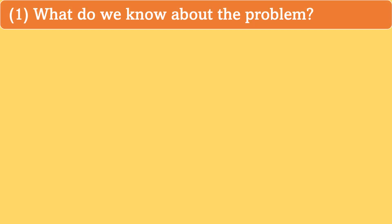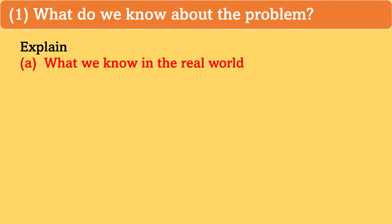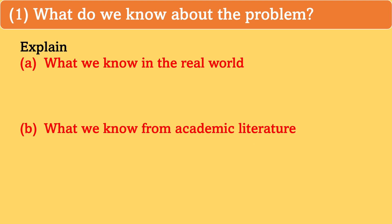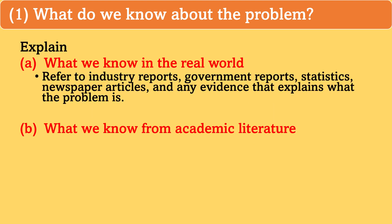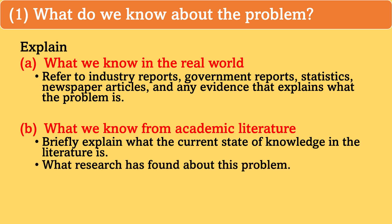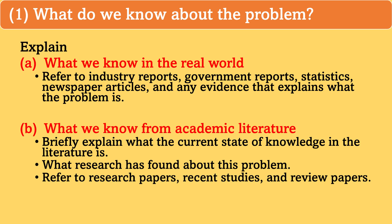Number one: what do we know about the problem? In this part, you need to explain what we know in the real world and what we know from the academic literature. To support what we know in the real world, you can refer to industry reports, government reports, statistics, newspaper articles, and any evidence that explains what the problem is. Then you need to briefly explain what the current state of knowledge in the literature is and what research has found about this problem. For this part, you need to cite research papers, and particularly recent studies and review papers.